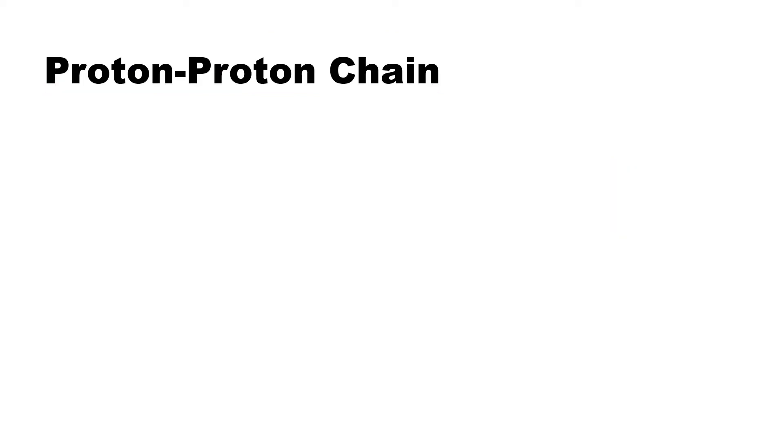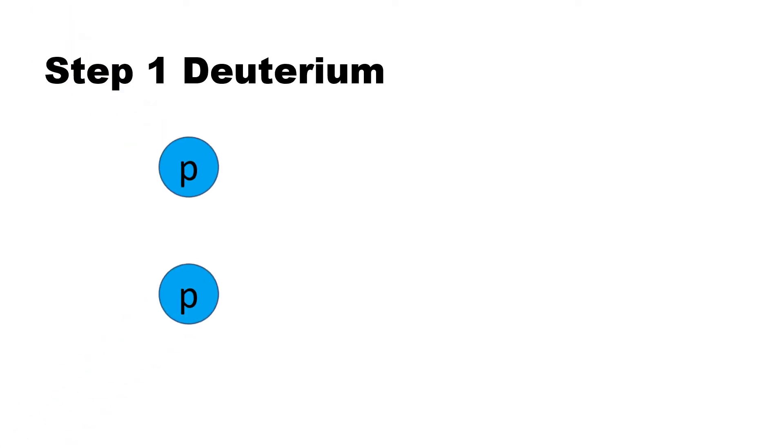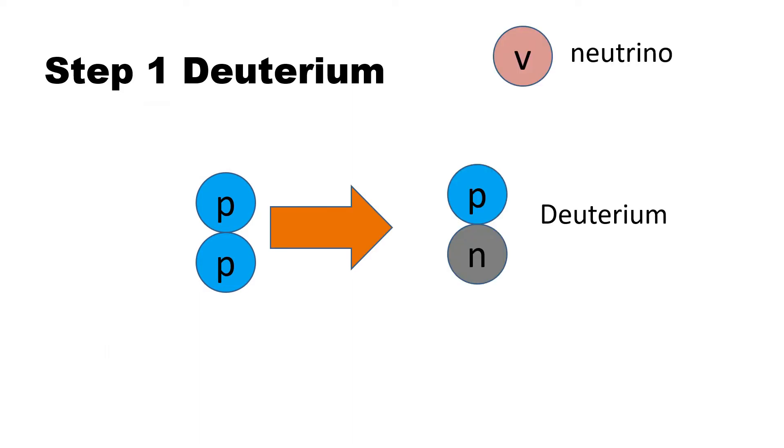The proton-proton, just like the name, has to start with two protons colliding. This reaction has three steps to diverting hydrogen to helium. When a proton collides with another proton, it produces deuterium, a positron, and a neutrino.